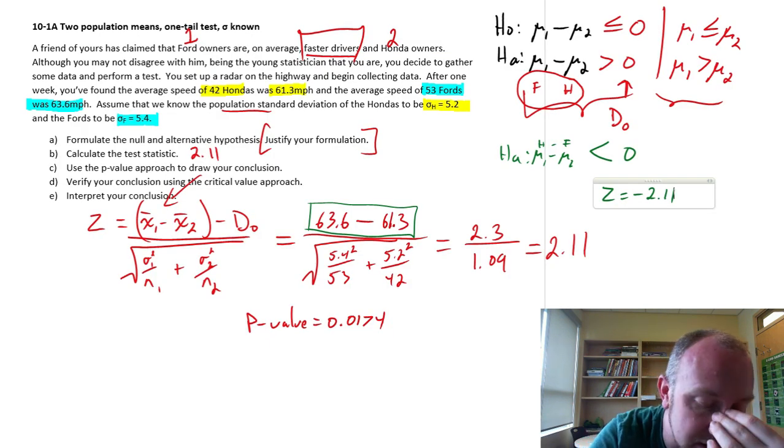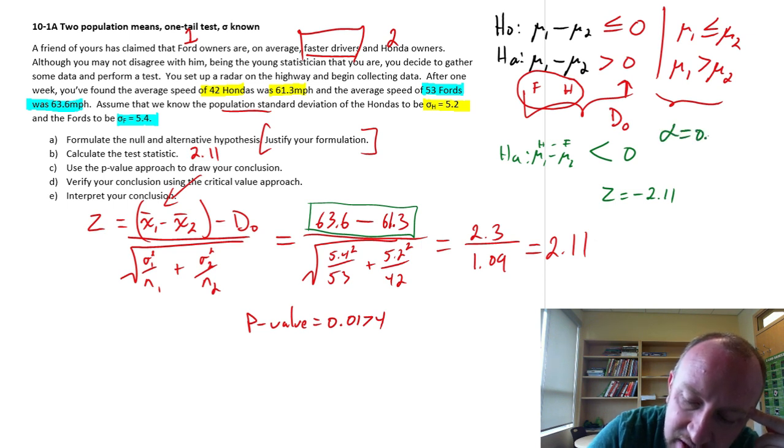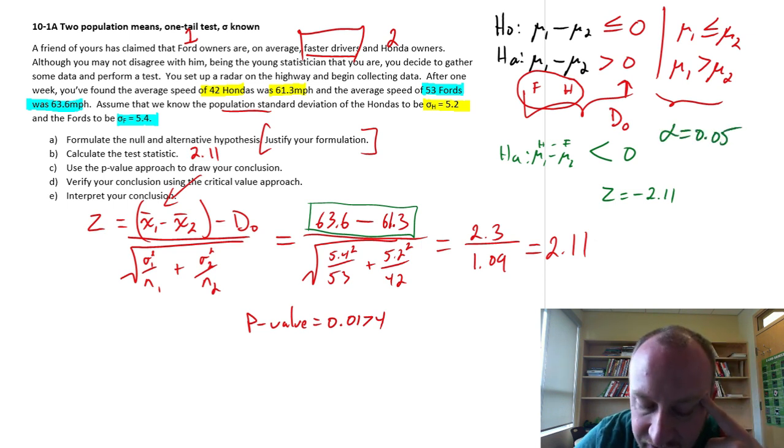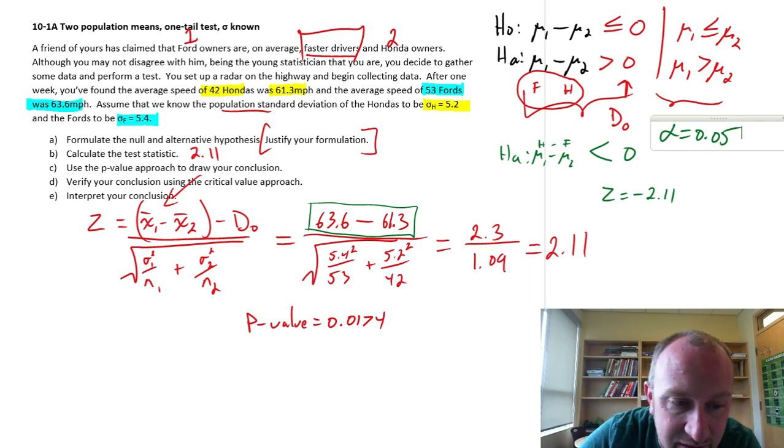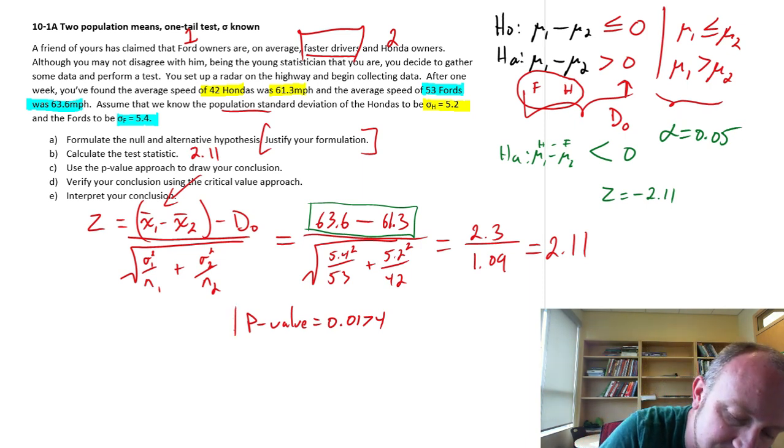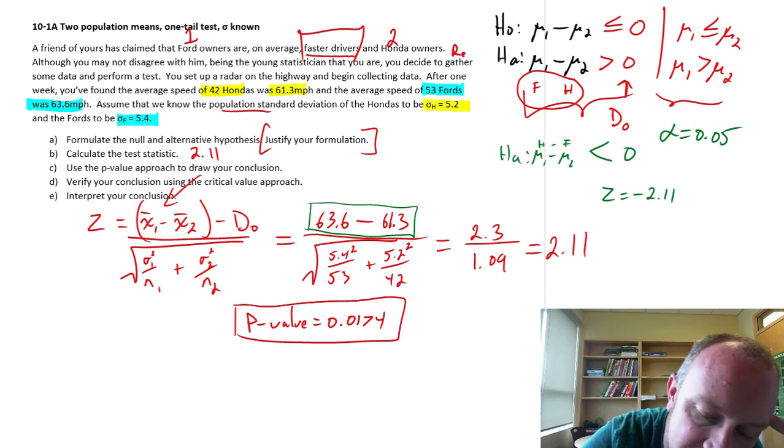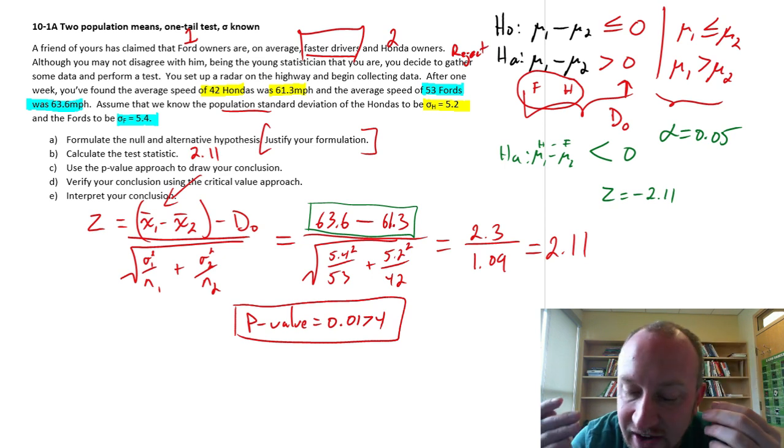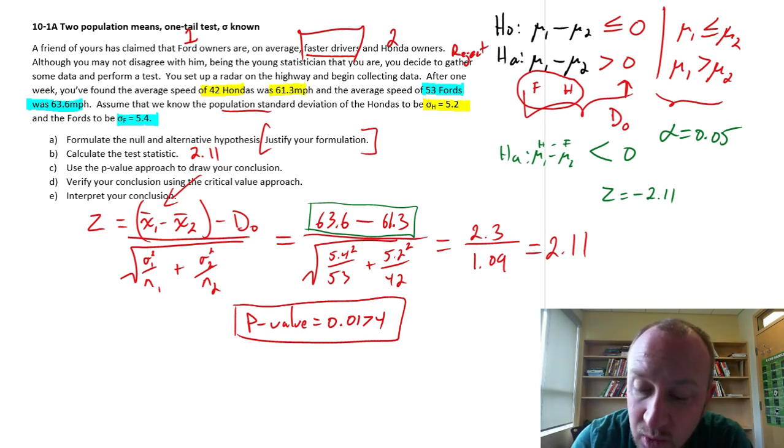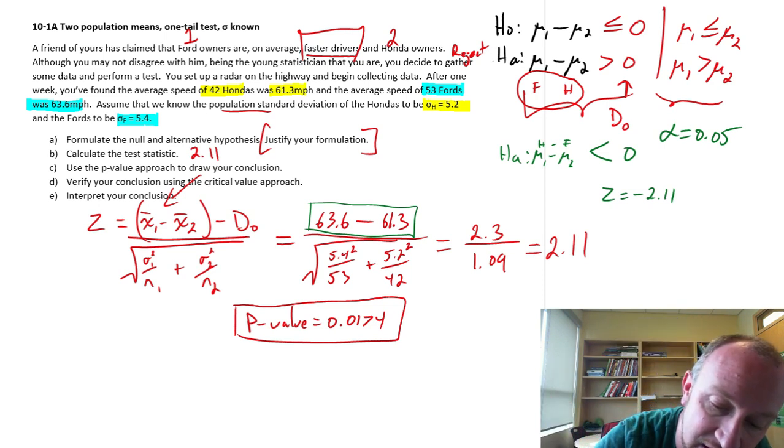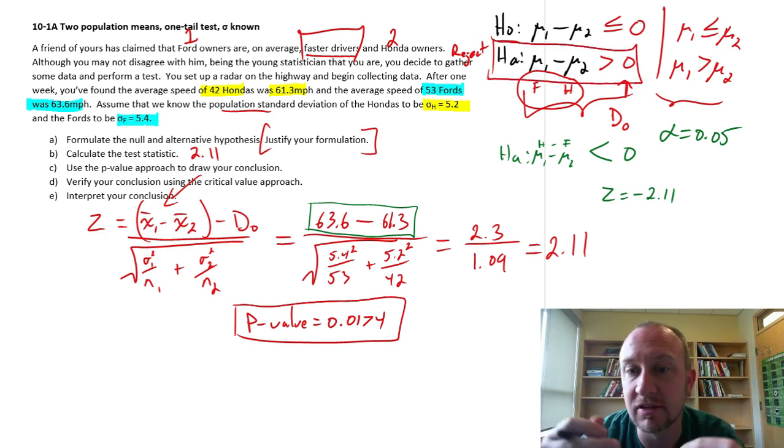So when we draw our conclusion, here we don't have an alpha given to us, so we can do this at the alpha 0.05 level of significance. So for this upper tail test, having obtained a p-value of 0.0174, that gives me sufficient evidence to reject. So I have evidence to support the alternative hypotheses, which means that I can support my friend's claim that on average, the Ford owners are driving faster than the Honda owners. And so that's my final conclusion, that the Ford owners are in fact faster than the Honda owners.